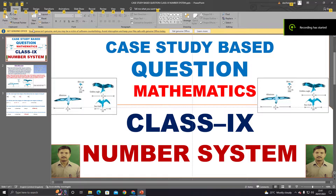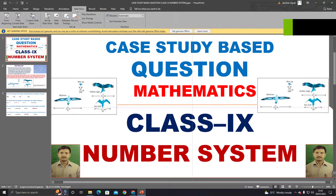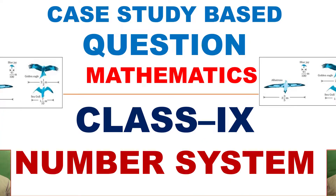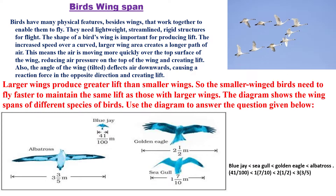Hello, my dear students. Here is a very interesting question for you from the chapter of number system, based upon rational or irrational numbers. Let's start the question — it is the bird's wingspan.